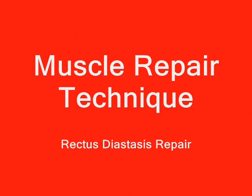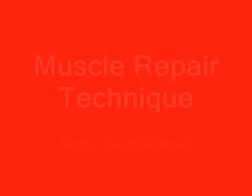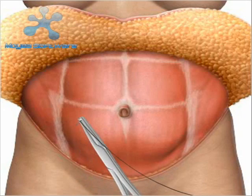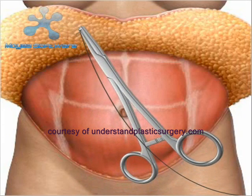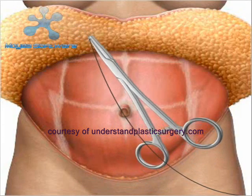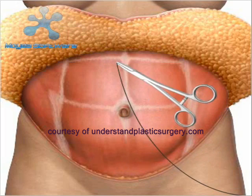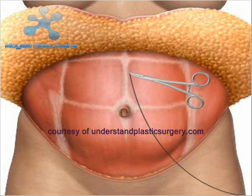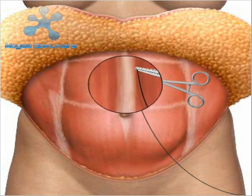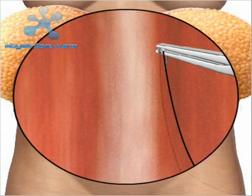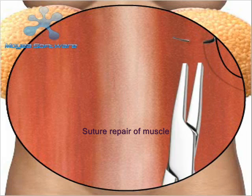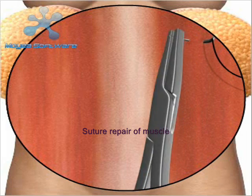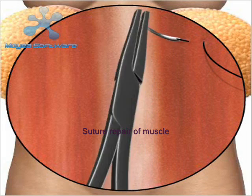This animation illustrates the muscle repair technique. In order to tighten the abdomen, the surgeon will suture the abdominal muscles, pulling them closer together, which creates a flatter, firmer abdominal wall and a slimmer waistline.